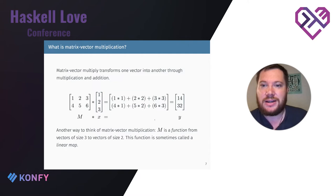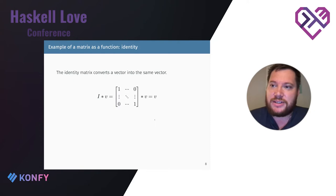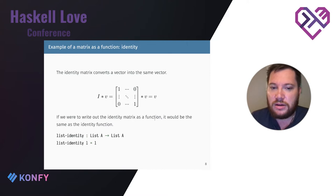If we think about matrices in terms of linear maps, we can identify some base matrices that give good intuition. The simplest is the identity matrix: since only the diagonal is ones, it just copies the input vector and returns it unchanged. It's equivalent to the identity function.